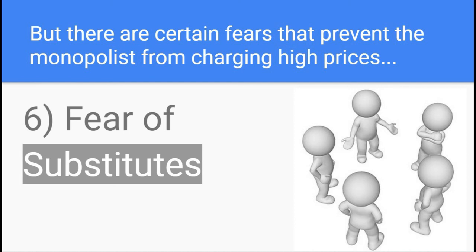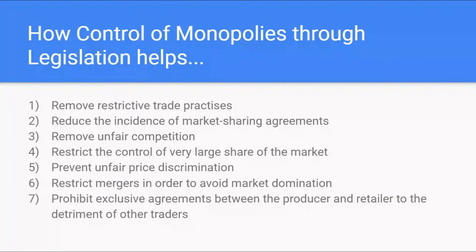So these are the ways in which the government controls and regulates monopolies. By regulating and controlling monopolies, governments can remove restrictive trade practices, can keep prices in check, can reduce the incidence of market sharing agreements and mergers to avoid market domination, and can remove unfair competition and unfair price discrimination. Therefore it's very important that the government controls and regulates monopolies. That's all about the control and regulation of monopolies.